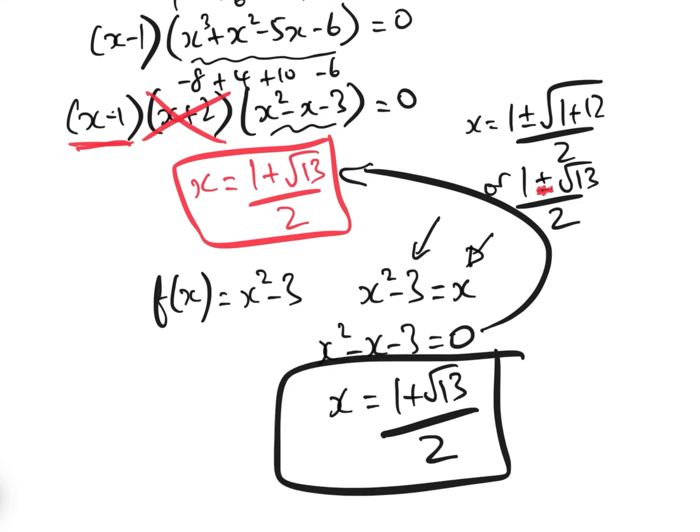And the answer therefore is x equals 1 plus root 13 over 2. We haven't even needed to find the inverse. So it's a very good method for solving these inverse equals the function problems, without actually having to bother finding the inverse. Okay, anybody who's interested in more of these videos, please subscribe to the Gresti Academy YouTube channel. Thank you.